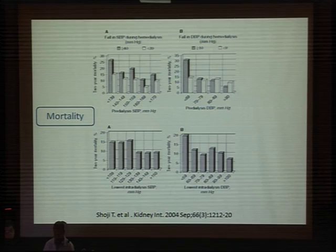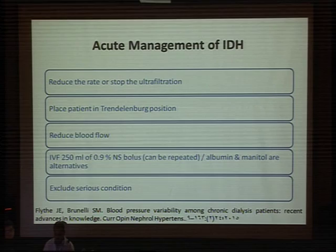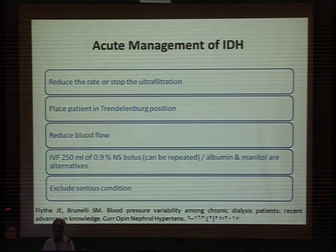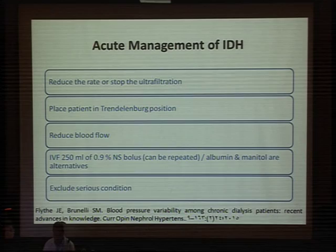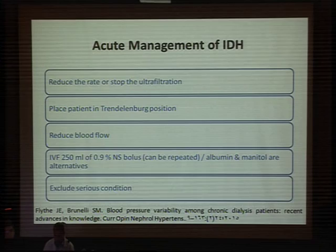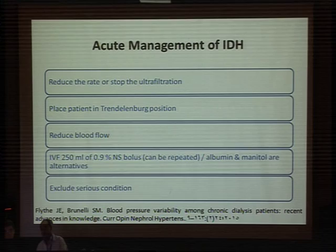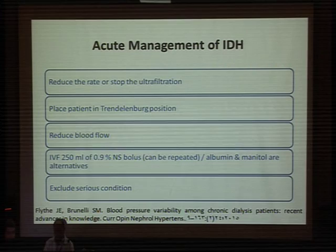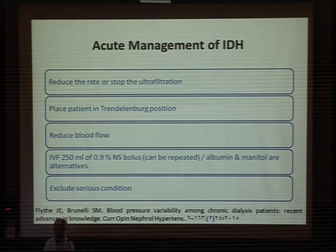Regarding how to manage a case of intra-dialytic hypotension, there are both acute management strategies and preventive measures. During an acute attack, you should reduce the ultrafiltration rate or stop ultrafiltration, place the patient in the Trendelenburg position, reduce blood flow, and give the patient 250 mL of an isoosmolar solution, albumin, or mannitol. You should also exclude serious conditions like ischemic heart disease.